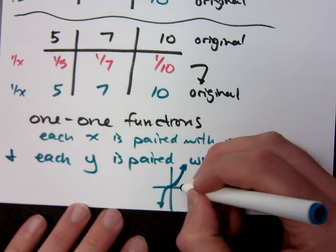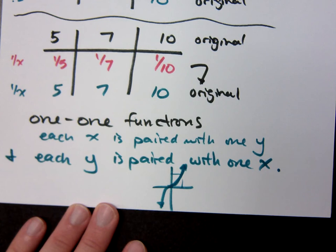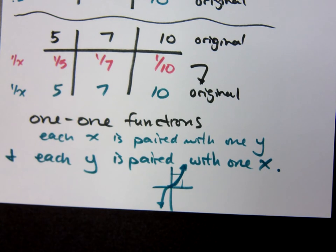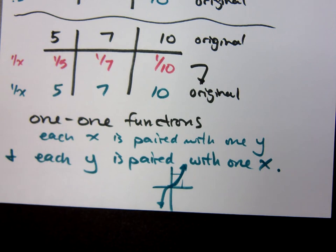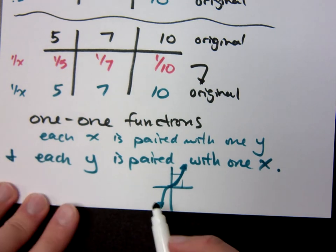For each x, you're paired with exactly one y value, no matter where you are. In order for you to be a function looking at a graph, you had to pass the what? The vertical line test. For you to be one-to-one, you have to be a function that passes the horizontal line test. The horizontal line test will ensure that the y's are not cheating. So, does this guy pass the horizontal line test? Yeah.